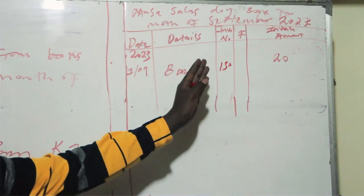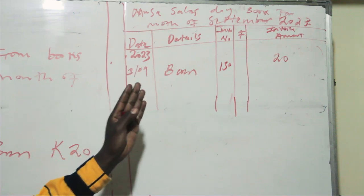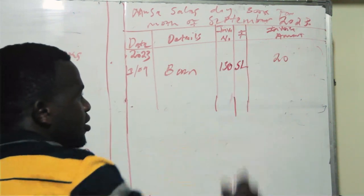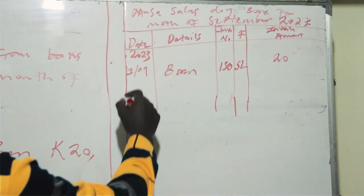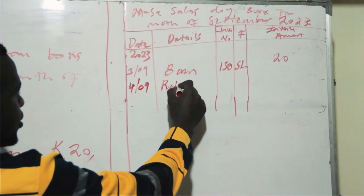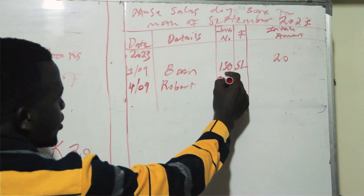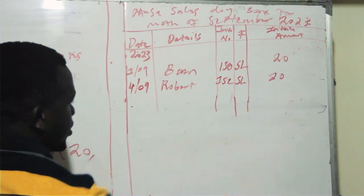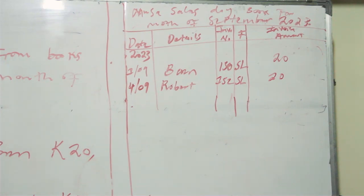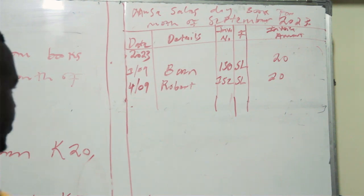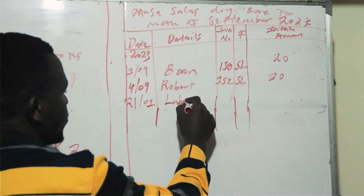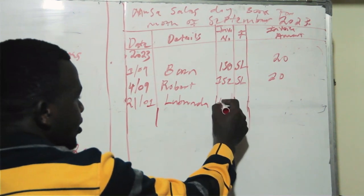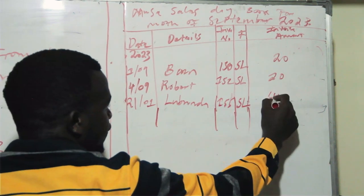In the folio column, you record the ledger where it's going. Since we're looking at the sales daybook, this amount goes to the sales ledger, so we write SL. For the second transaction on the 4th of September, we record Robert, sales invoice 152, sales ledger, 20 kwacha. The last transaction on the 21st — sold goods to Lubunda, invoice number 155, sales ledger, 40 kwacha.